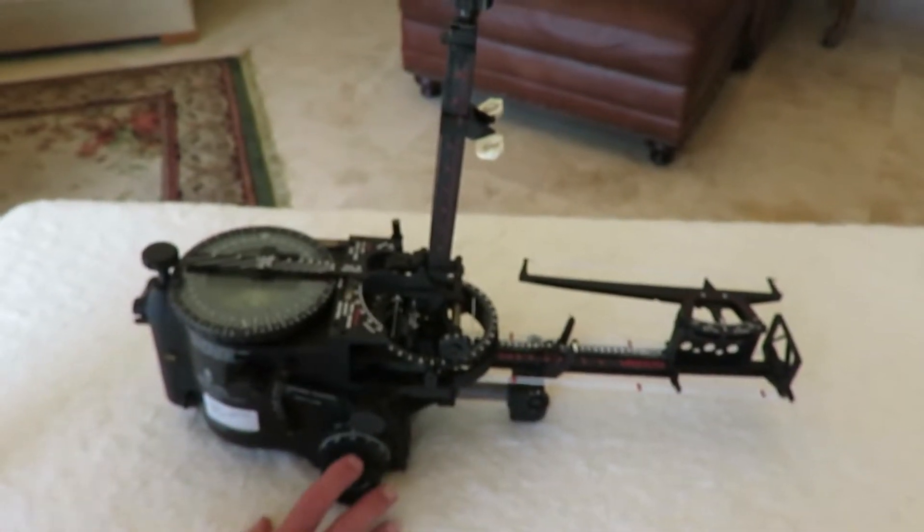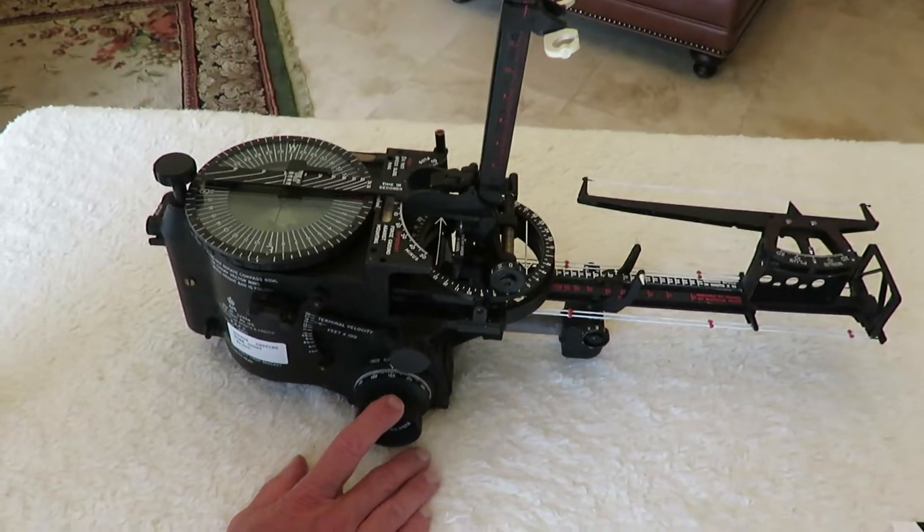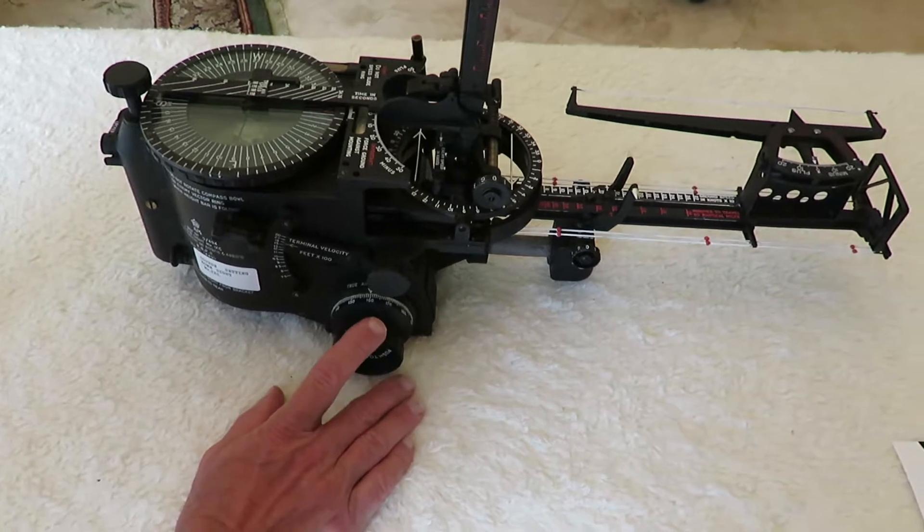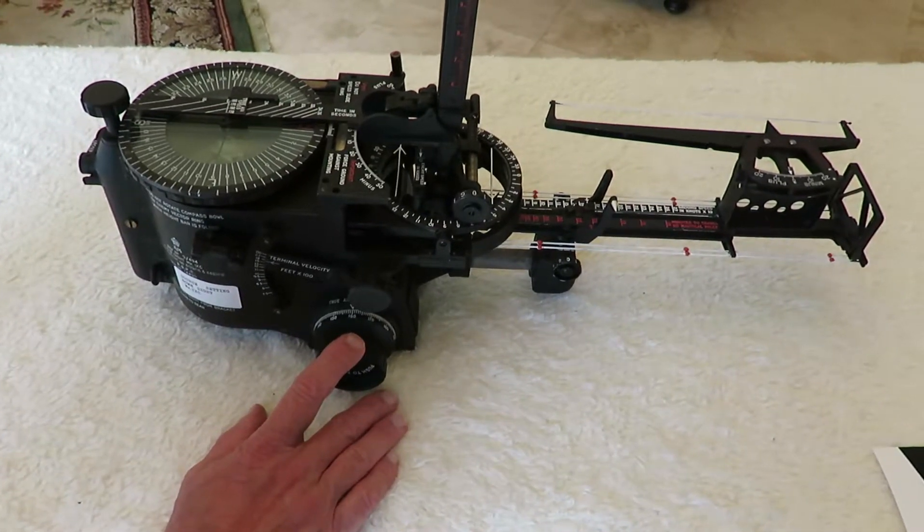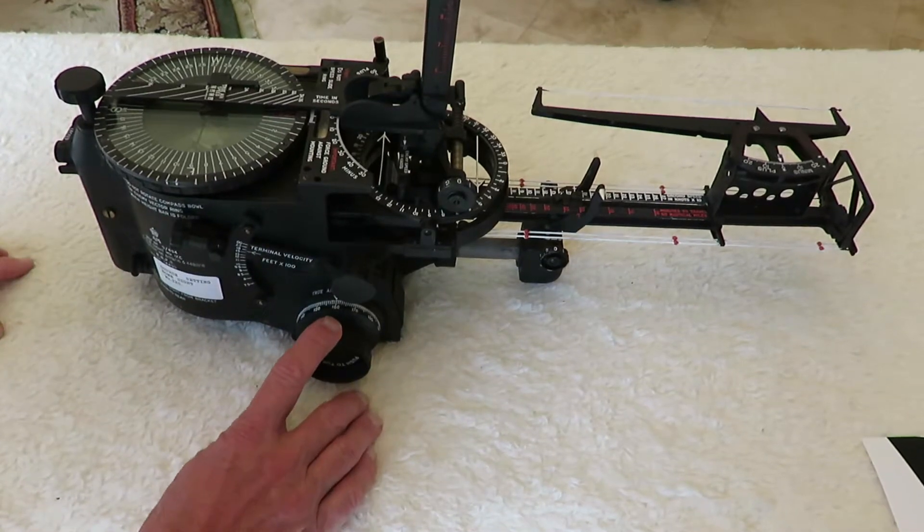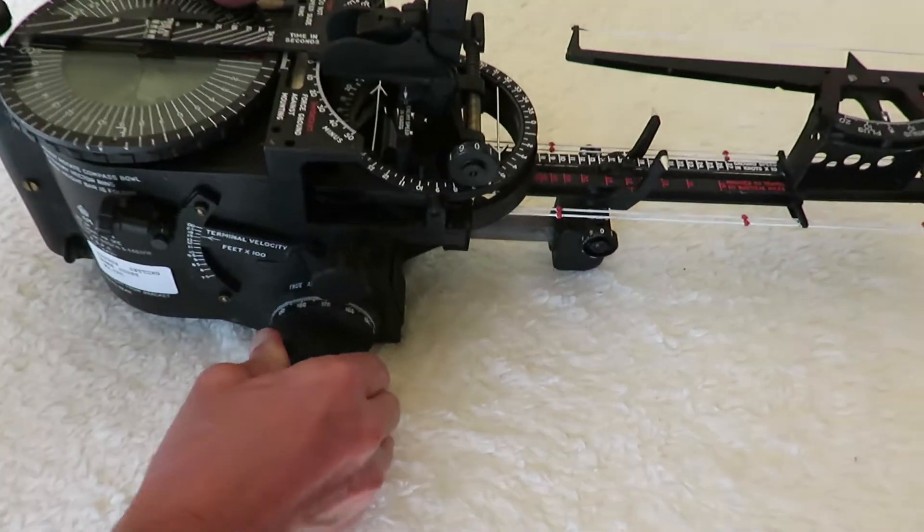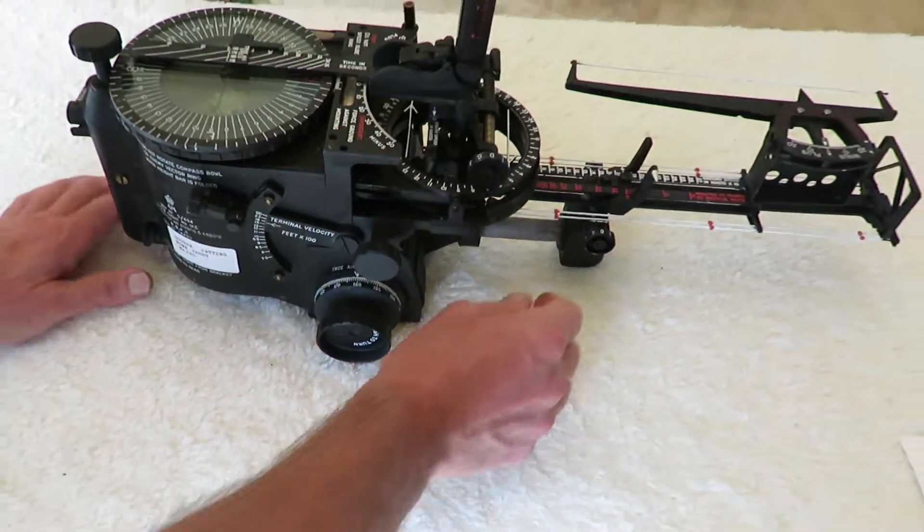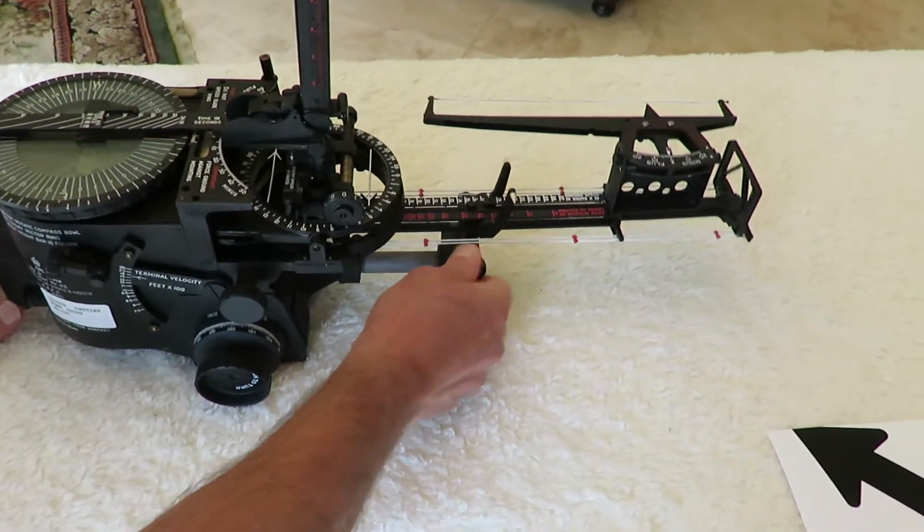The first order of business when using the course setting bombsite is to determine the wind direction and drift angle. There are three major ways to do this, and I will demonstrate one of them. The first step is to adjust it for the true airspeed. In this case, 180 knots.